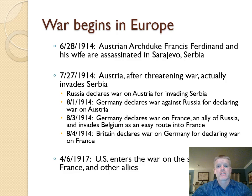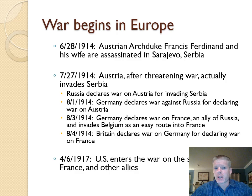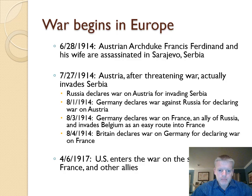Germany also declares war on France because France is an ally of Russia. And because Germany wants to invade France quickly, instead of going through their fortified defenses, Germany goes right around through Belgium to get into France. Britain then declares war on Germany. So within a week, pretty much all of the powers in Europe have declared war on each other. World War One has begun.